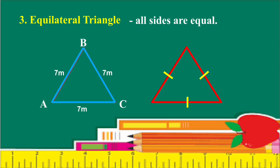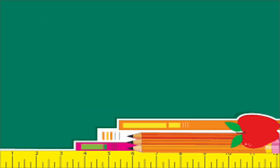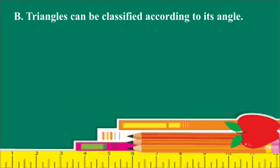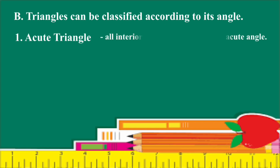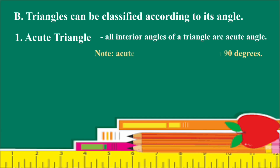Triangles can also be classified according to the measure of the angle. The first one is the Acute Triangle, where all interior angles are acute angles. Note that an acute angle measures less than 90 degrees.